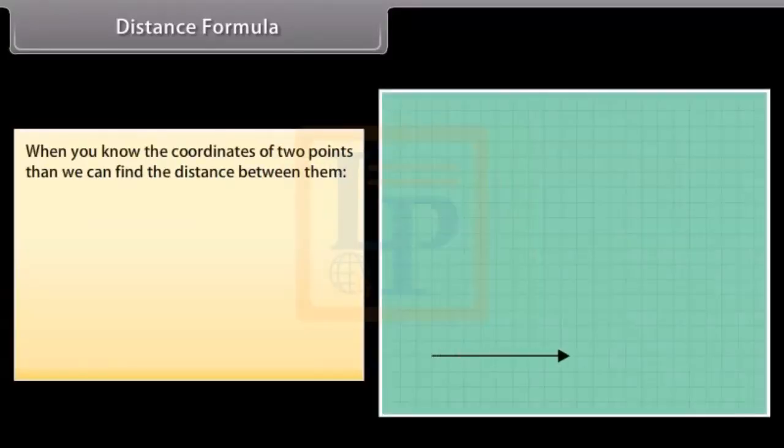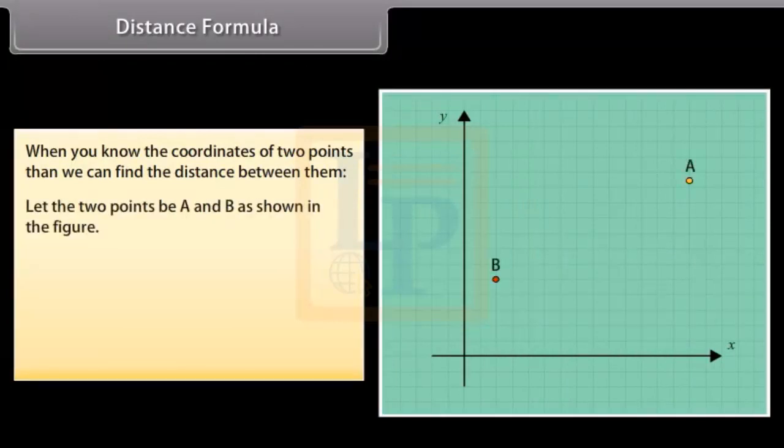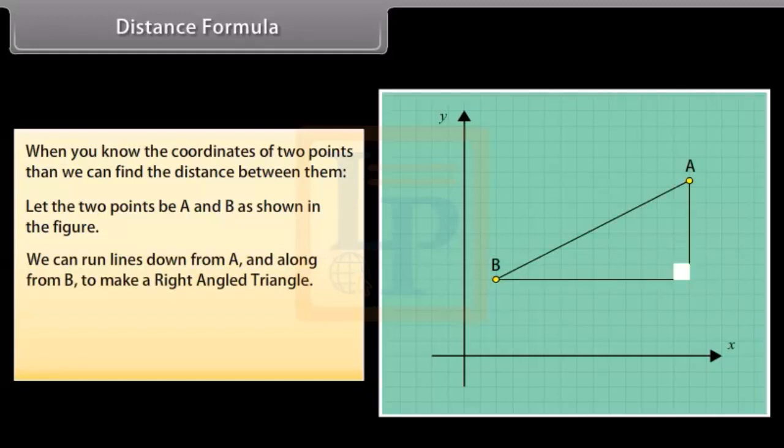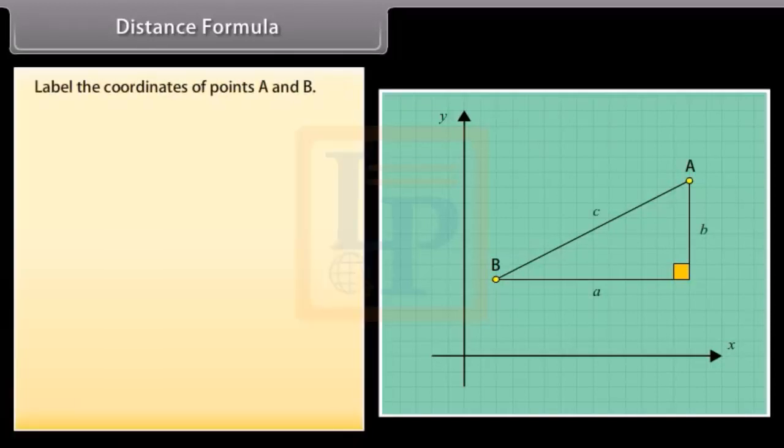Distance formula. When you know the coordinates of two points, then we can find the distance between them. Let the two points be A and B as shown in the figure. We can run lines down from A and along from B to make a right angled triangle.